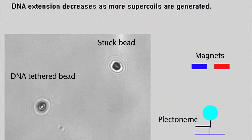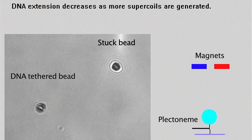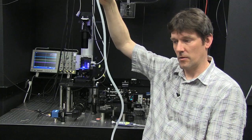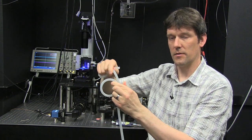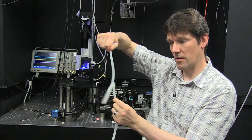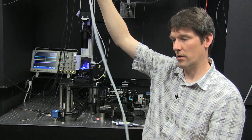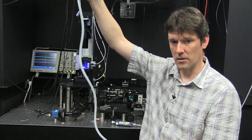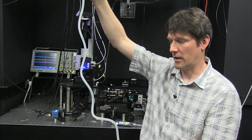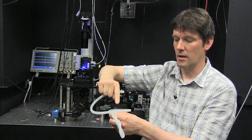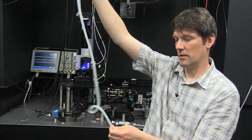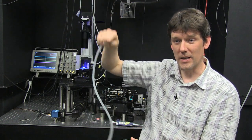The biological systems we can measure with this are anything that interacts with DNA. If an enzyme were to bind and loop a piece of DNA, I can see that because the extension decreases. A large class of enzymes we study are the topoisomerases that can unknot and unlink DNA. We wind up the DNA and it unknots or unlinks it, and we can follow individual steps of individual enzymes.